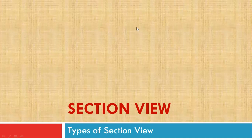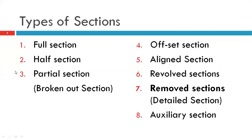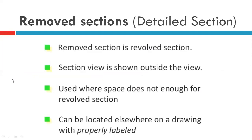In this section view lecture, we have seen different types of sections over the last few lectures — six different types: full section, half section, partial section (broken out section), offset section, aligned section, and revolved section. Now it is time to see the removed section, which some books call the detailed section. This is the second-to-last type of section; after this we will see the auxiliary section in tomorrow's lecture. Let's discuss the key points related to removed sections.